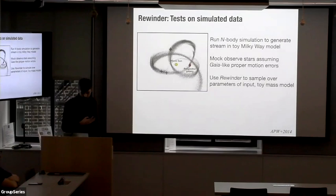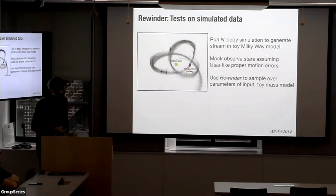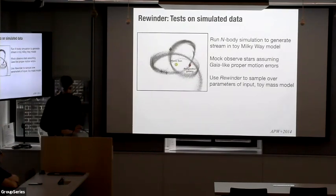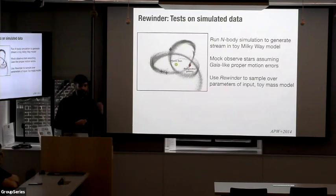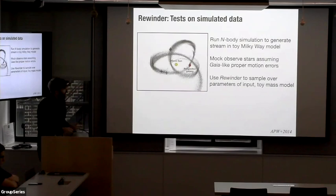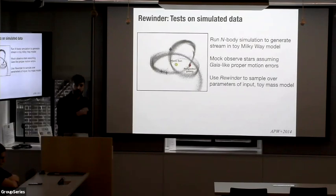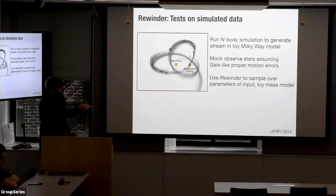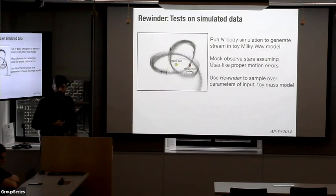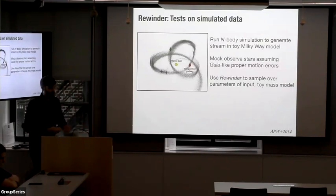We've tested this on some simulations of the Sagittarius stream. This is the final snapshot of an N-body simulation of Sagittarius that I'm showing here — just to test the waters and see how precisely we can recover the parameters of the model used to run the simulation. We run the simulation, then mock-observe some stars assuming Gaia-like proper motion uncertainties and measurable distances. We also assume some independent measurements of the progenitor system today, so we know its position and velocity. Then once we have those mock observations, we run the model and try to see if we recover what we used to run the simulation.